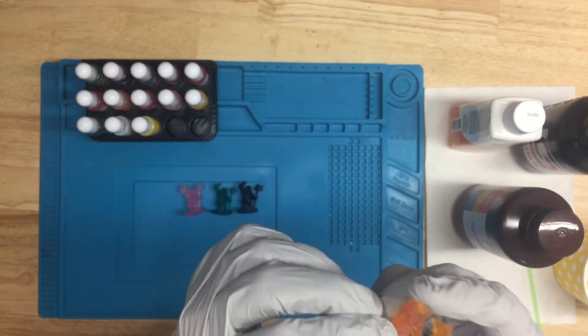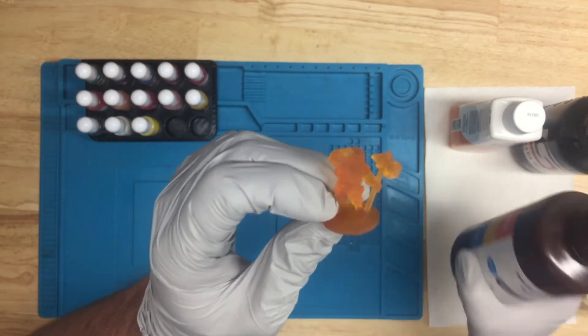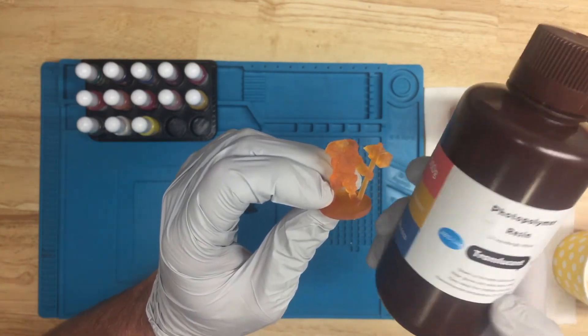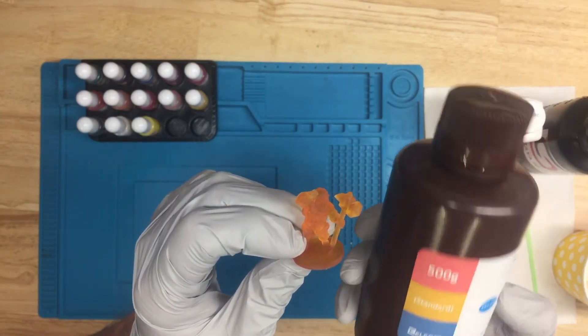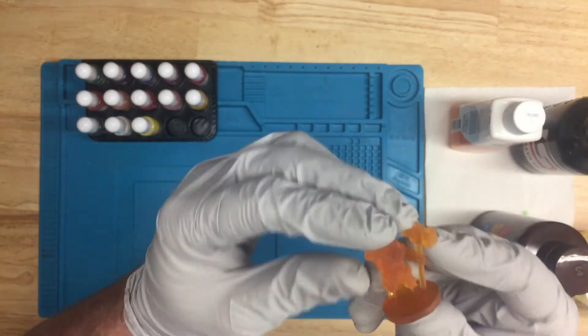Okay, and the last one, it's another success. Look at that, that one turned out pretty good. This was the ABS Like resin from Elegoo. This is the nice cheap stuff. Turned out really, really nice.